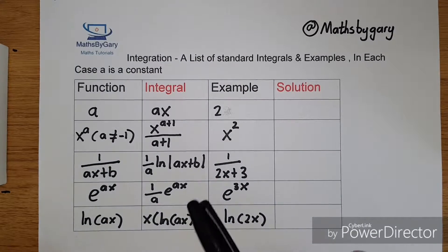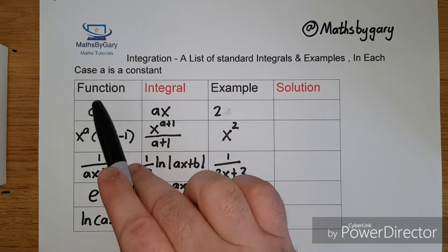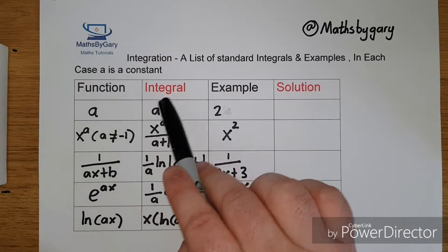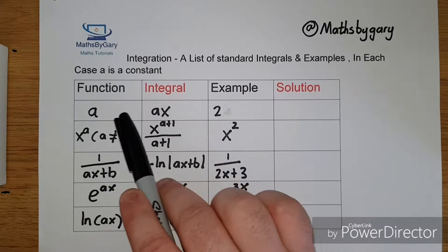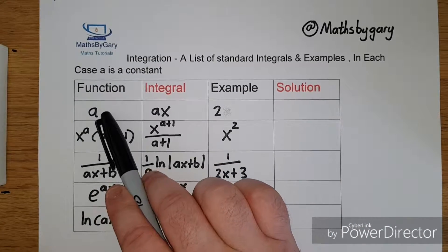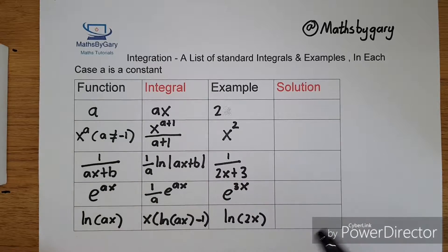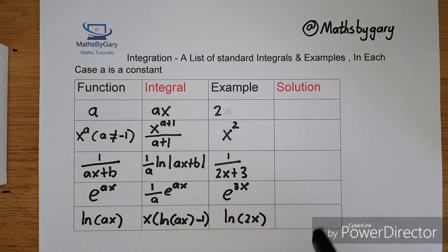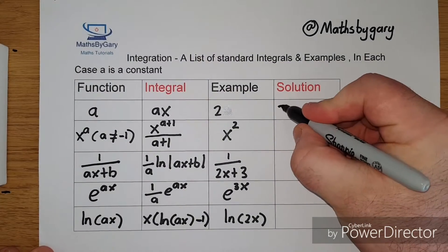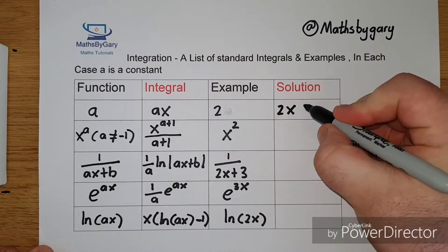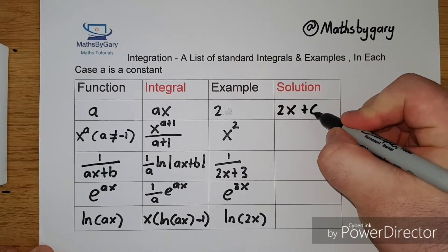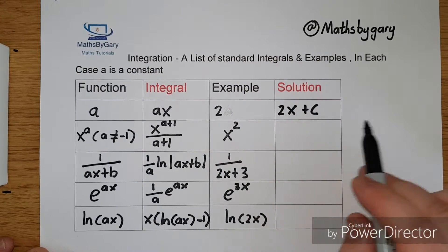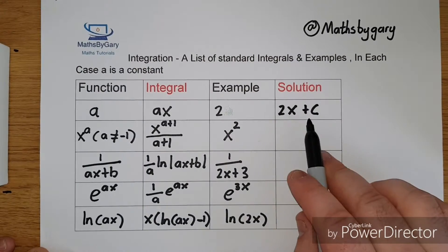First of all we're going to take a look at the function a. The integral of a constant a gives ax. An example: if we take the number to be 2, then 2 becomes 2x, and then plus c. The reason we add plus c is because that is the constant of integration.